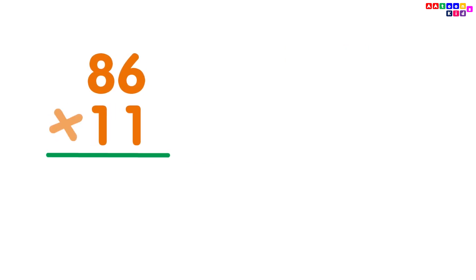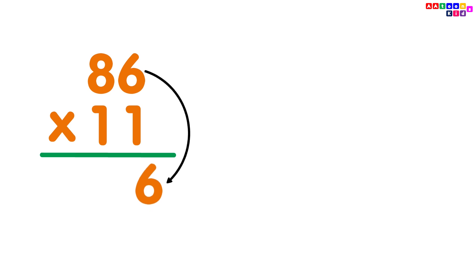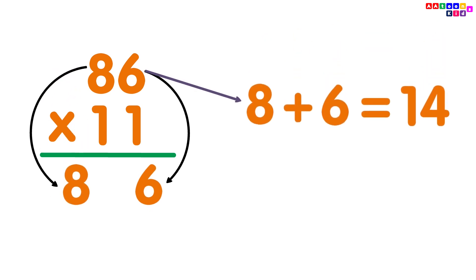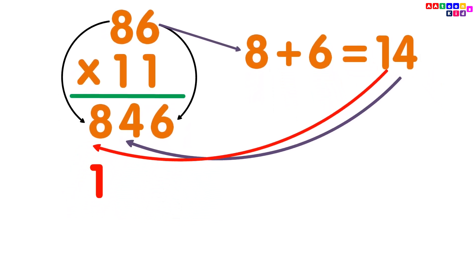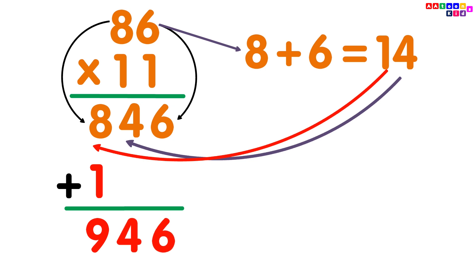86 multiplied by 11. Simply write the digits 8 and 6. Then add the digits: 8 plus 6 equals 14. Put the 4 between digits 8 and 6, then add 1 with 8. So you will get your answer 946. So, 86 multiplied by 11 is equal to 946.